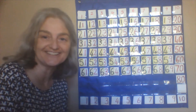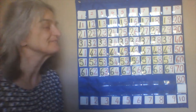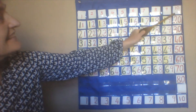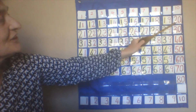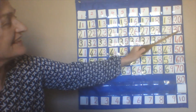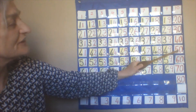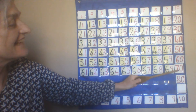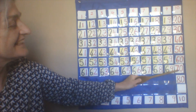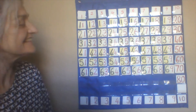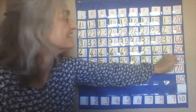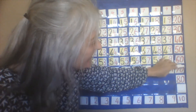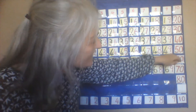We know how to do this, right? 10, 20, 30, 40, 50, 60, 70. 70 is the ruler of the sevens.